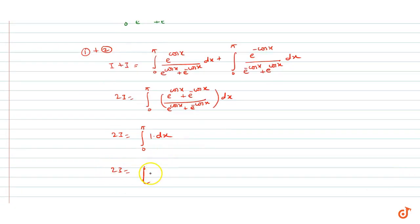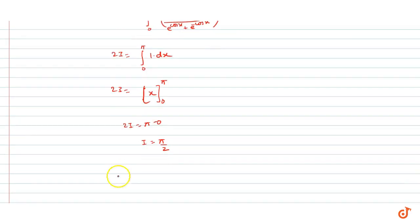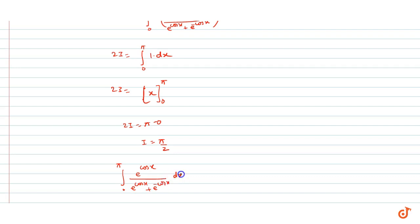Integration of 1 dx to x ke equal ho jaega. Tho 2I ho jaega [x] from 0 to pi, which equals pi. Therefore I equals pi upon 2.